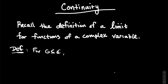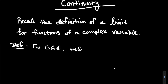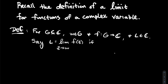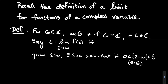Here's the definition: for G, some subset of the complex plane, W an element of G, and F a function whose domain is G, and L just some complex number — to say that L equals the limit as Z approaches W of F(Z), we use the epsilon-delta definition. Given epsilon greater than zero, there exists some positive real number delta such that if the absolute value of Z minus W is between zero and delta.